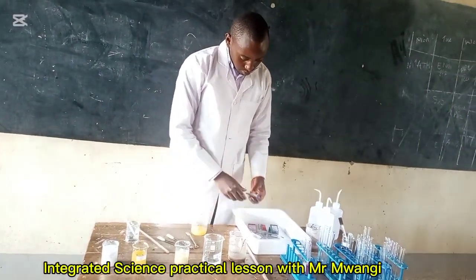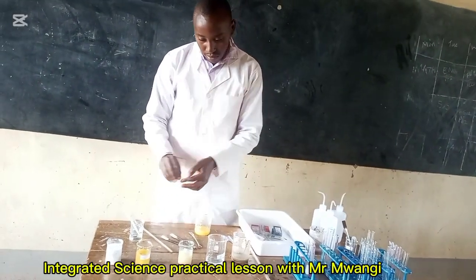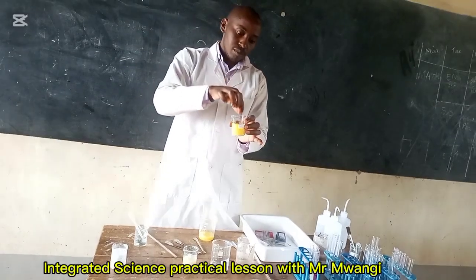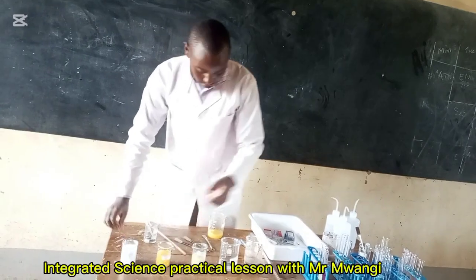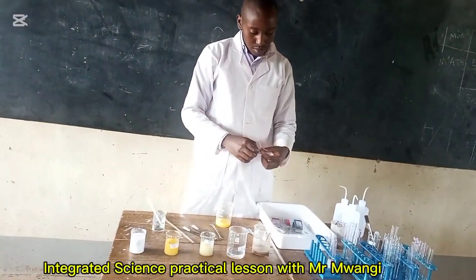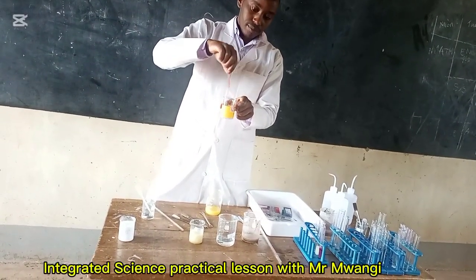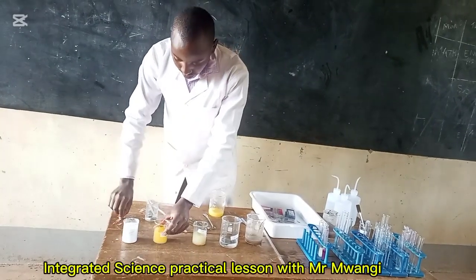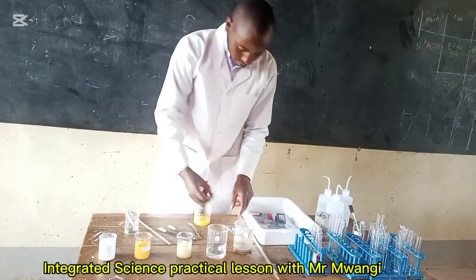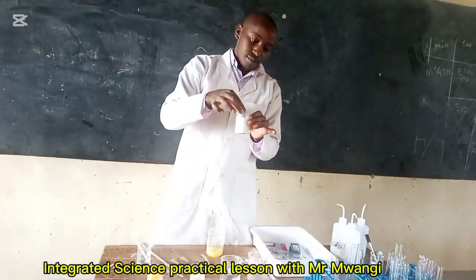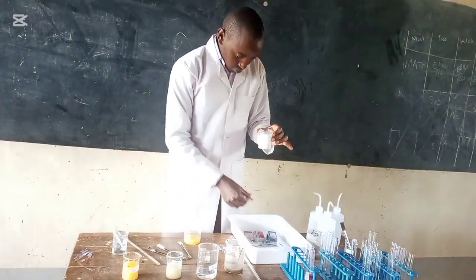I'll go to solution C, which is orange juice, and conduct the test using a blue litmus paper. Once I dip it, it will turn red, meaning that is an acidic solution. I can also use a red litmus paper — if I dip it in the same solution D, which is orange juice, it won't change color, confirming it is acidic. For solution E, a blue litmus paper will indicate that this is a basic solution.